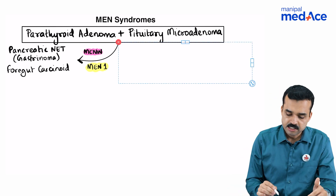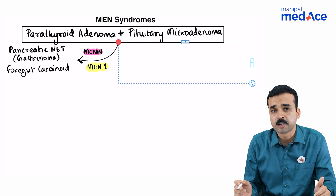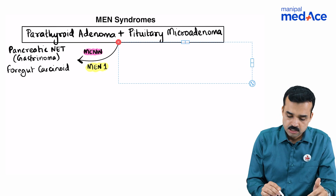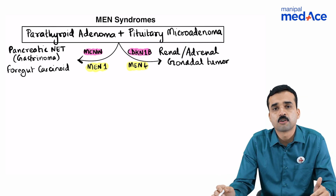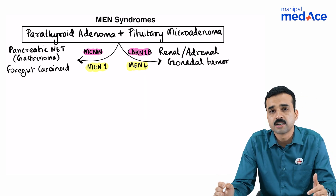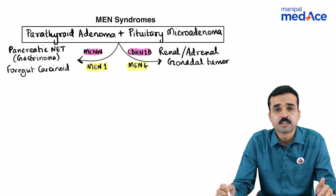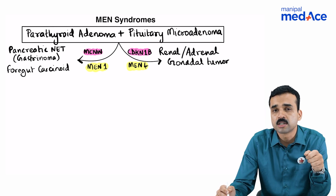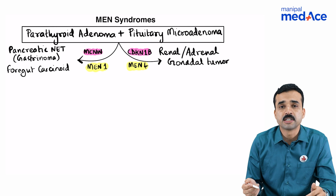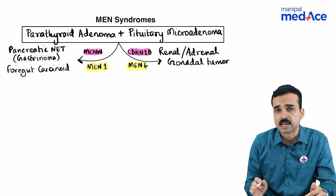Instead, if this combination of parathyroid adenoma with pituitary microadenoma occurs along with tumors of renal, adrenal, or gonadal origin, then think of MEN4 syndrome. MEN4 occurs due to a mutation in the cyclin-dependent kinase N1B gene, present on chromosome number 12.